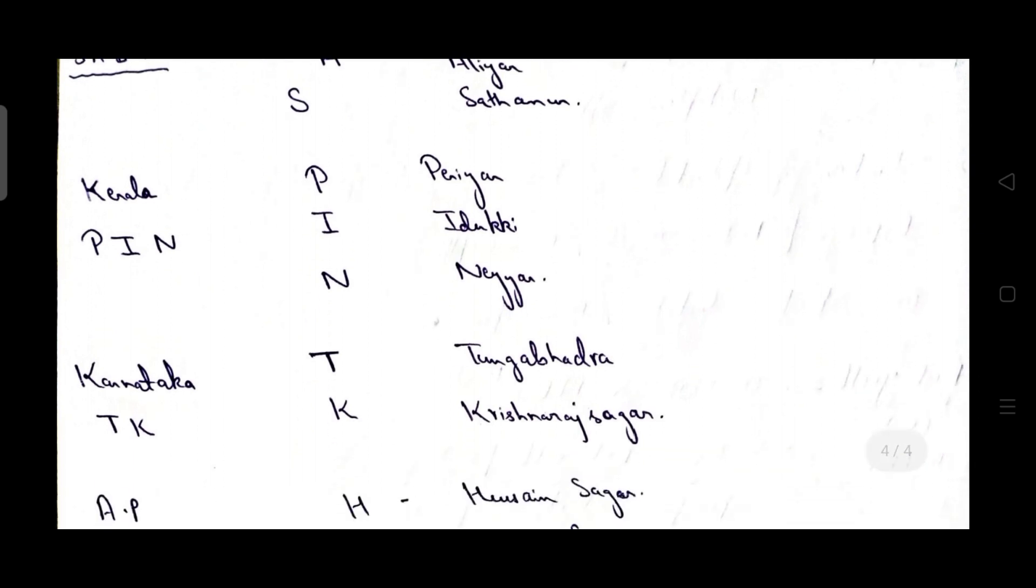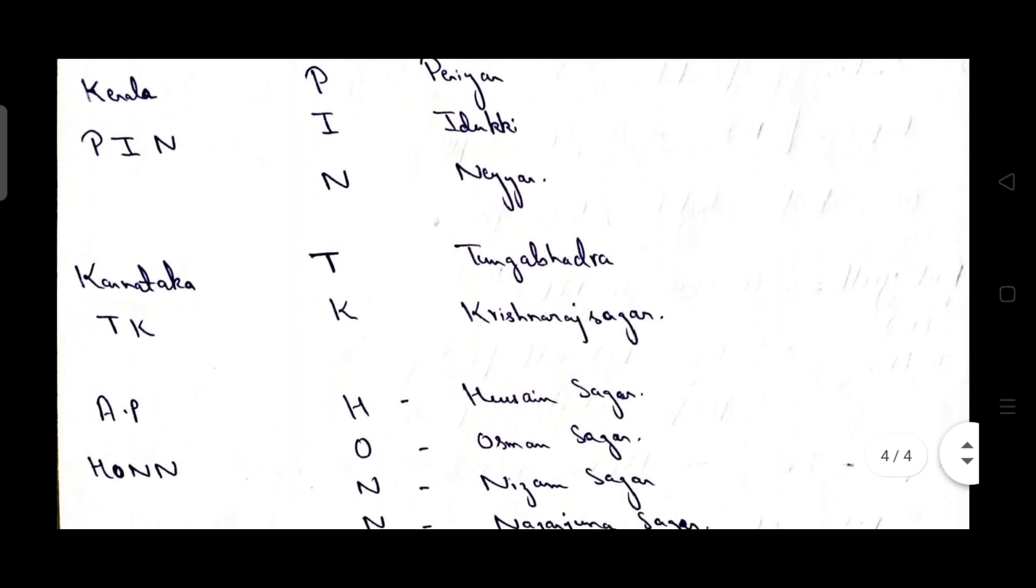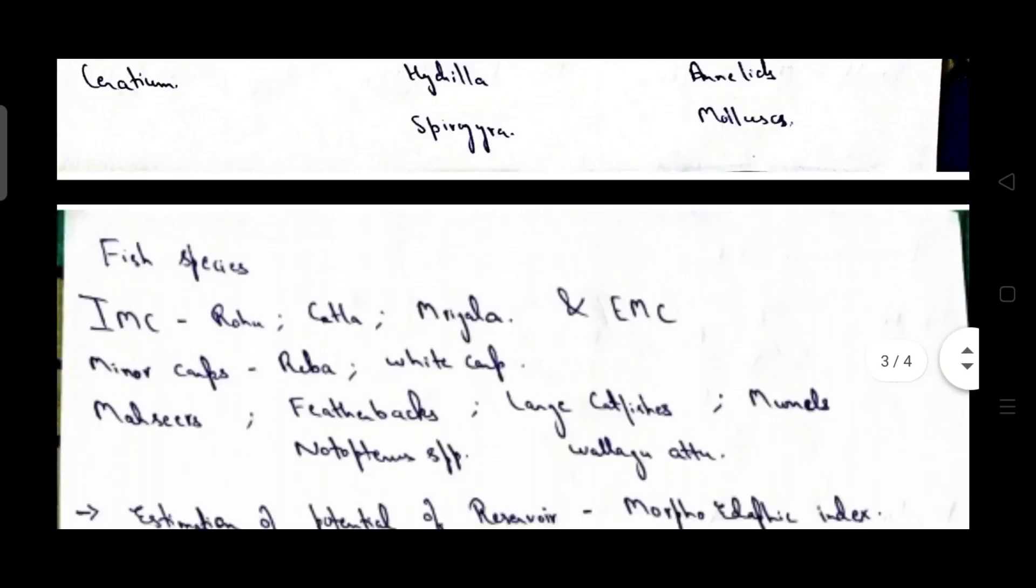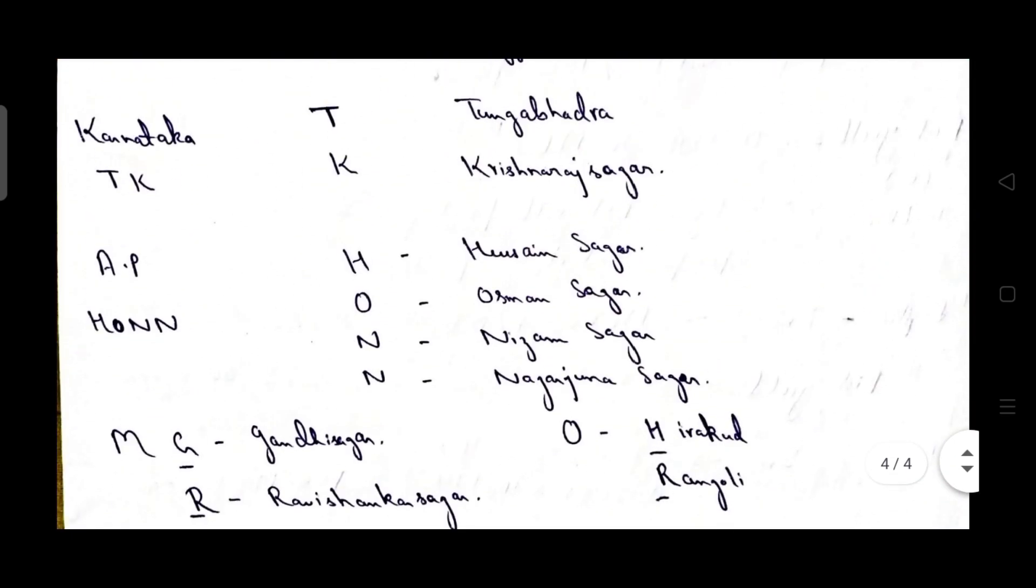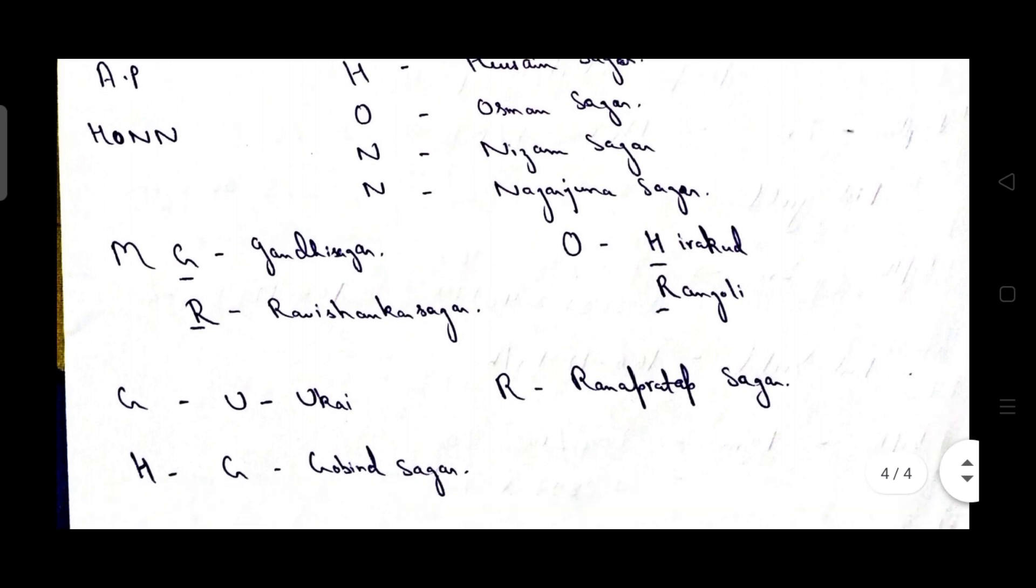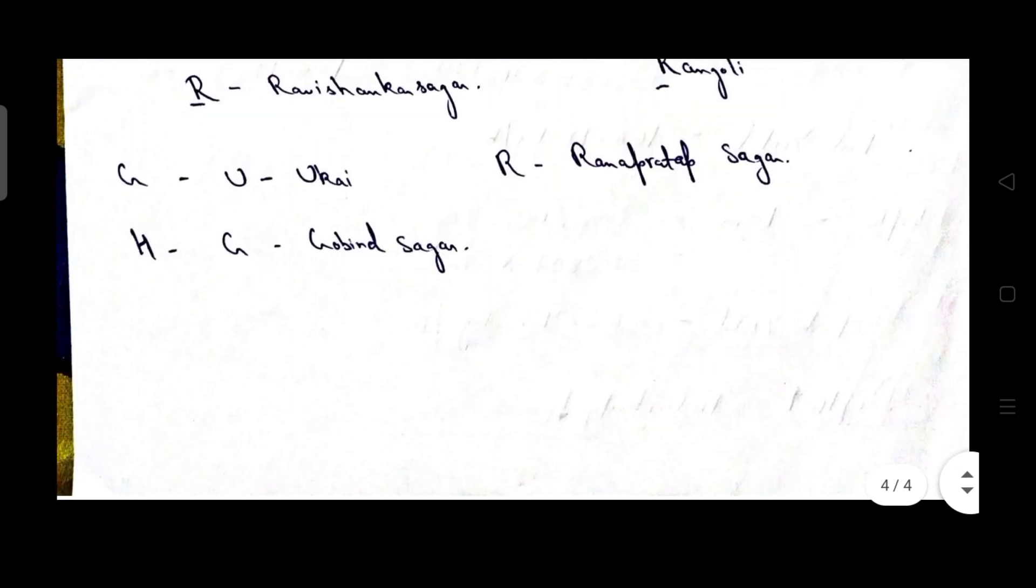Then MGR that is Madhya Pradesh Gandhi Sagar and Ravi Shankar Sagar, Odisha with Hirakud and Rengali, then Gujarat with Ukai, Himachal Pradesh with Govind Sagar reservoir and Rajasthan with Rana Pratap Sagar reservoir. Once again we'll go through the names of reservoirs in India. Madhya Pradesh with GR Gandhi Sagar and Ravi Shankar Sagar, Odisha with Hirakud and Rengali and Gujarat with Ukai, Rajasthan Rana Pratap Sagar, Himachal Pradesh with Govind Sagar.